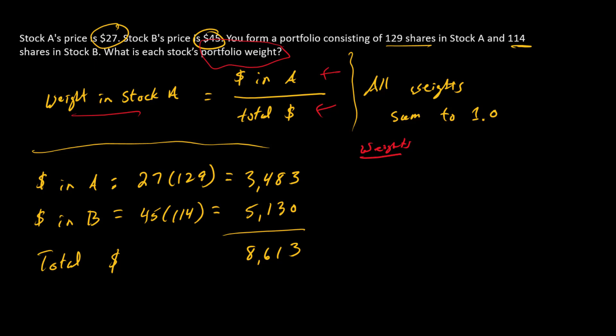And so for A, and we'll call this W_A, that's 3,483 divided by 8,613, which is 0.4044.